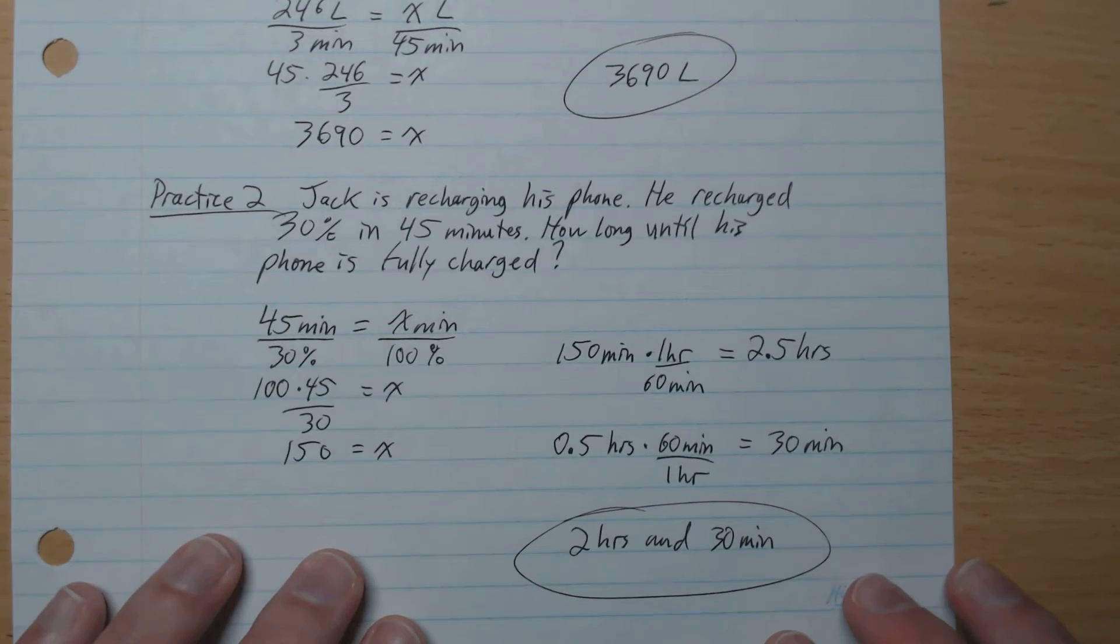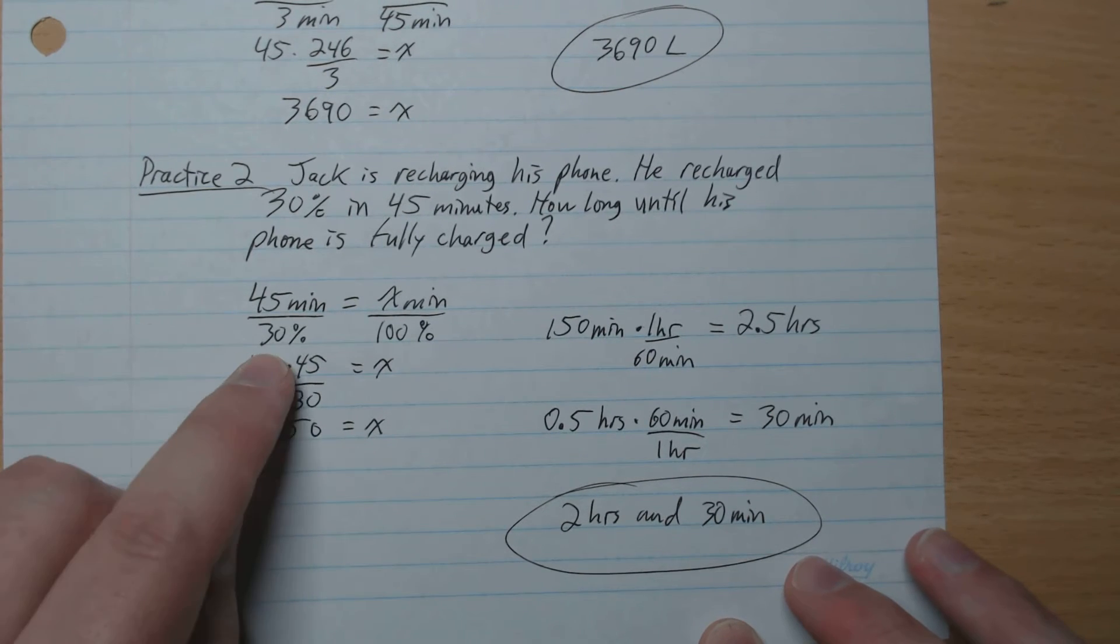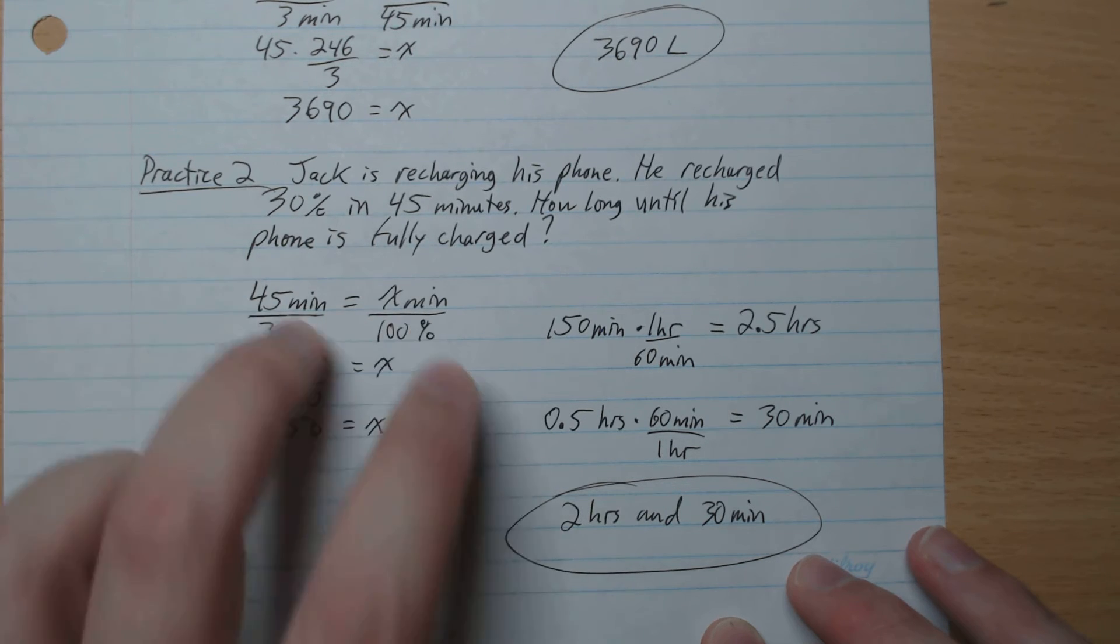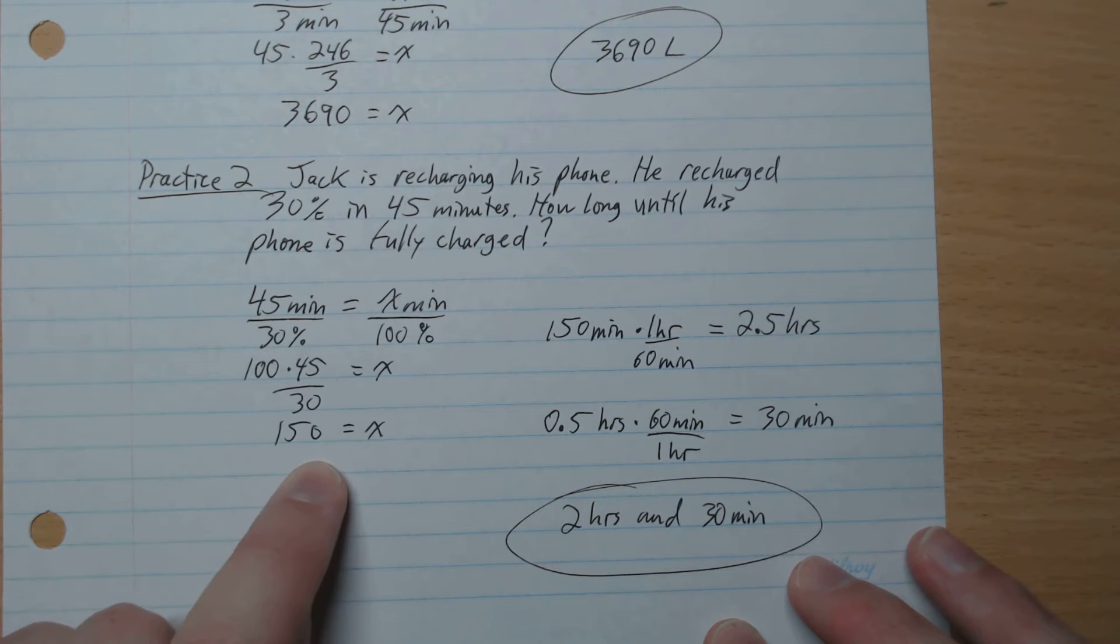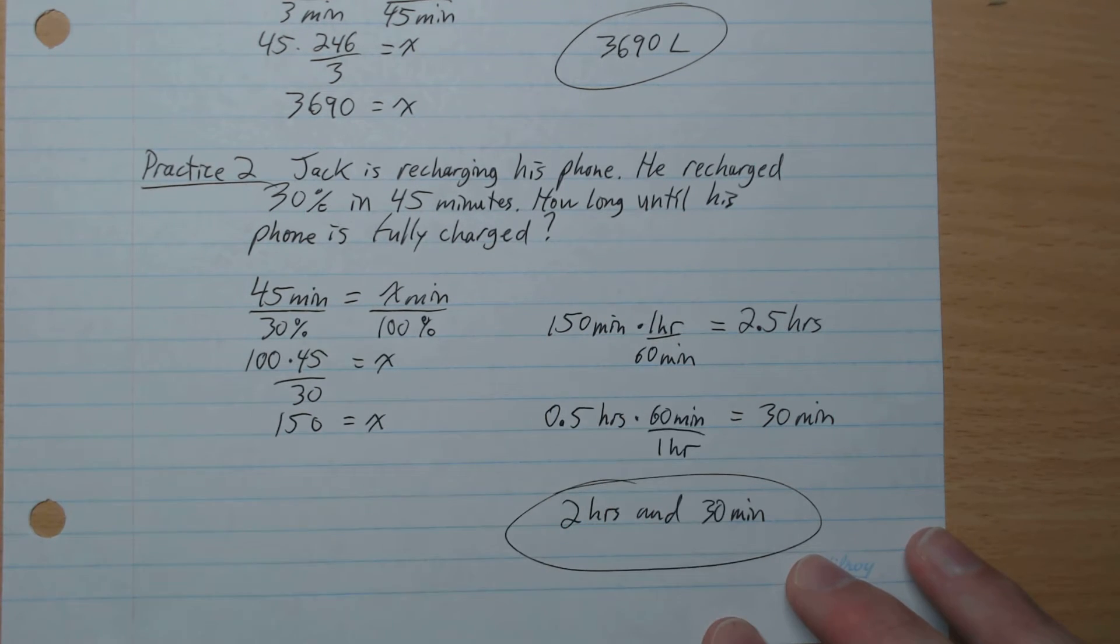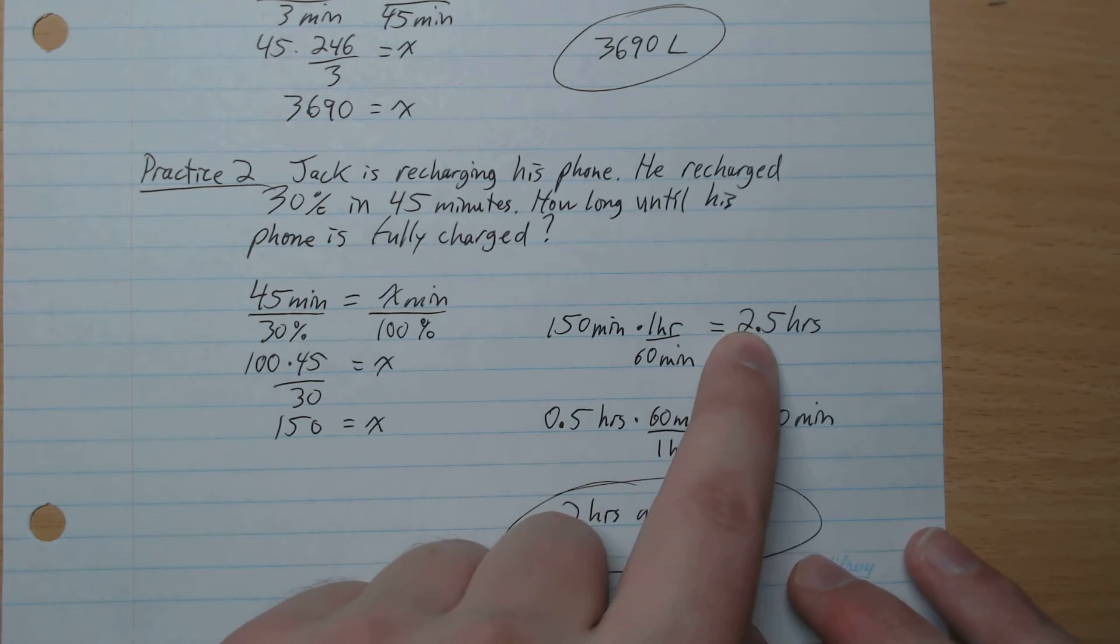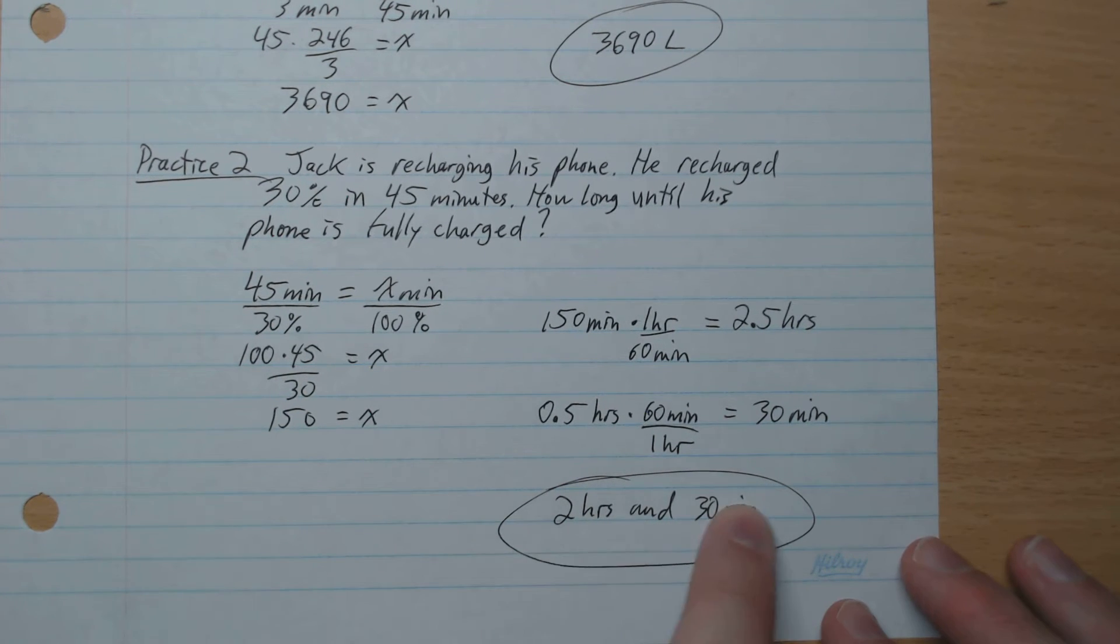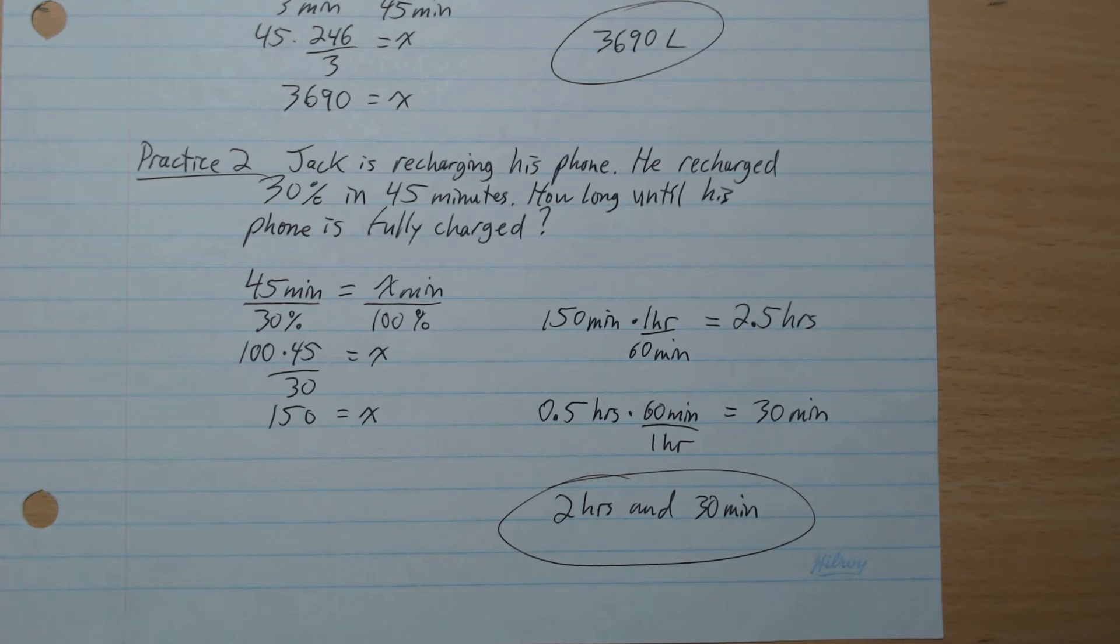Okay, we're back. We have 45 minutes gives 30%, unknown minute gives 100%. So times 100 both sides get x on its own, which is 150 minutes. Convert into hours: one hour over 60 minutes cancels the minutes, so we get 2.5 hours. We convert the 0.5 hours back to minutes, so minutes over hour, hours cancel out. 0.5 times 60 gives 30 minutes. The total time is 2 hours and 30 minutes.